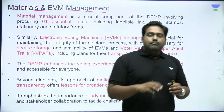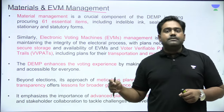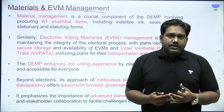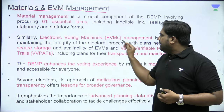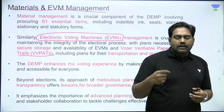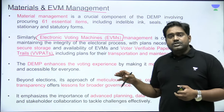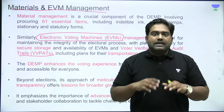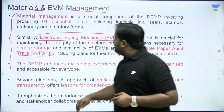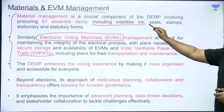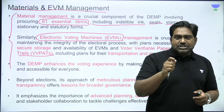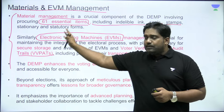Then finally, material management — especially the EVMs and VVPATs, which represent the electoral process itself. Apart from that, a lot of other material is involved: stationary equipment, the required amount of indelible ink, seals and stamps. In total, believe it or not, there are 61 essential items required for the conduct of elections — this has to be ensured at every single polling station. So it's not an easy task to ensure the logistics and that these 61 mandatory items are readily available in adequate supply.